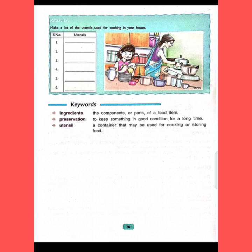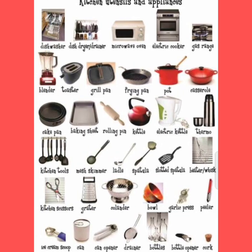Here is one activity: make a list of the utensils used for cooking in your house. In this picture you can see various utensils like pressure cooker, jars, plates, jugs, tea pans, cups, glasses, wok, etc. I am also showing one picture where you can find many utensils used for cooking in your house.